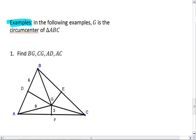In example 1, given the drawing below, and in all of these examples, do note that G is the circumcenter of triangle ABC. So given the drawing below and the given lengths, we want to find BG, CG, AD, and AC.